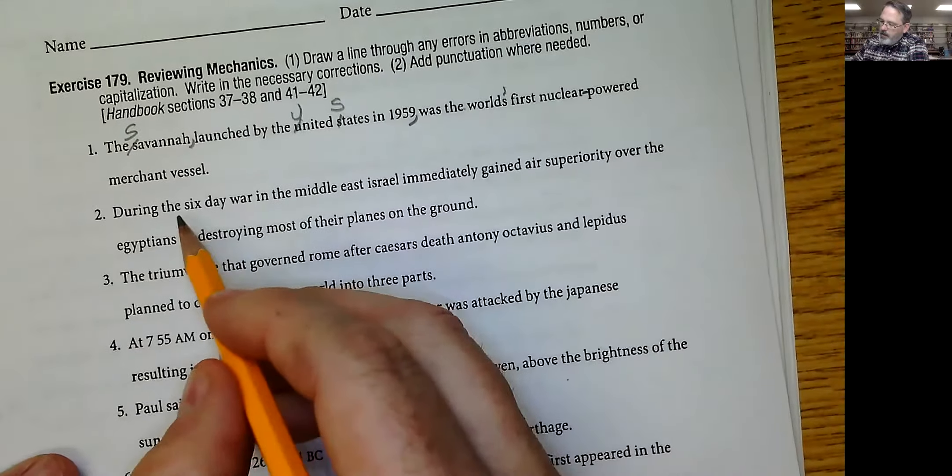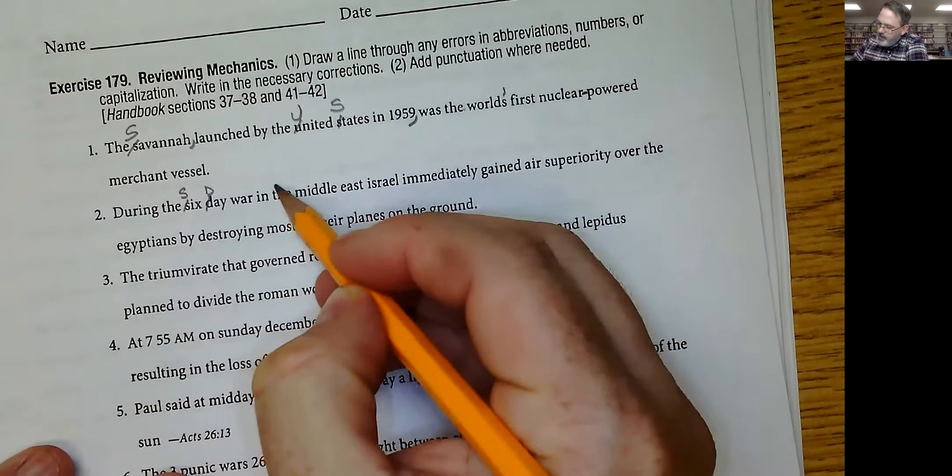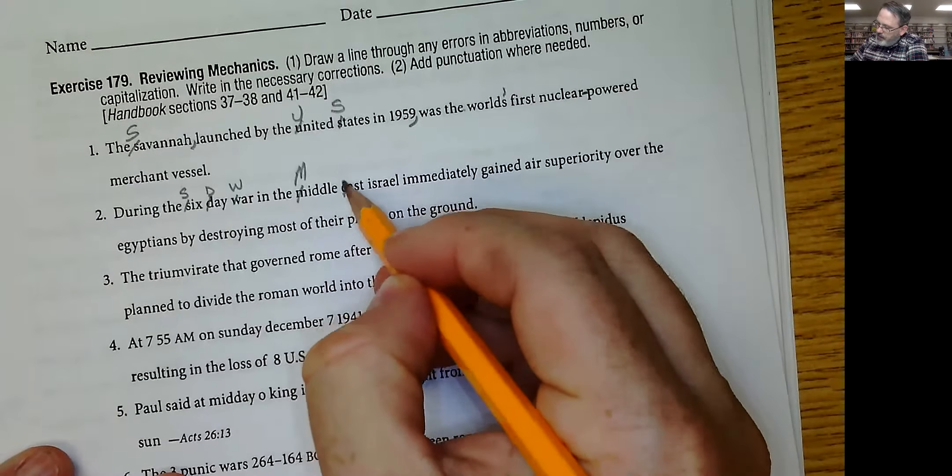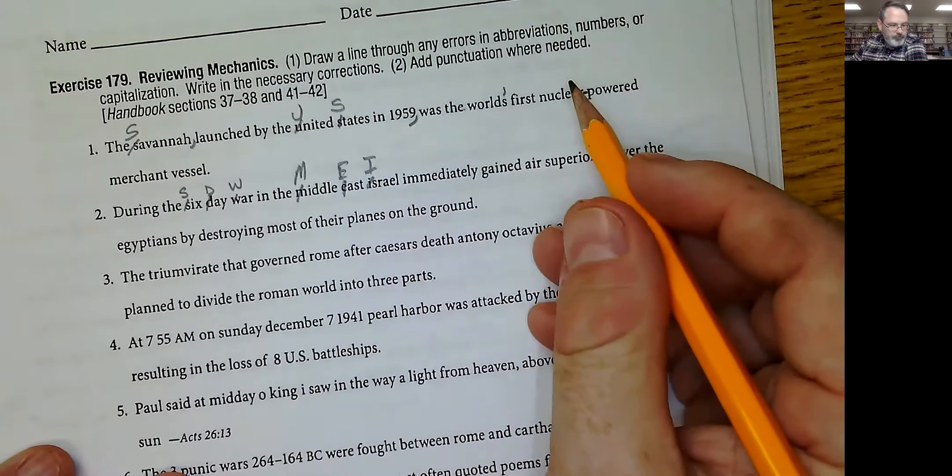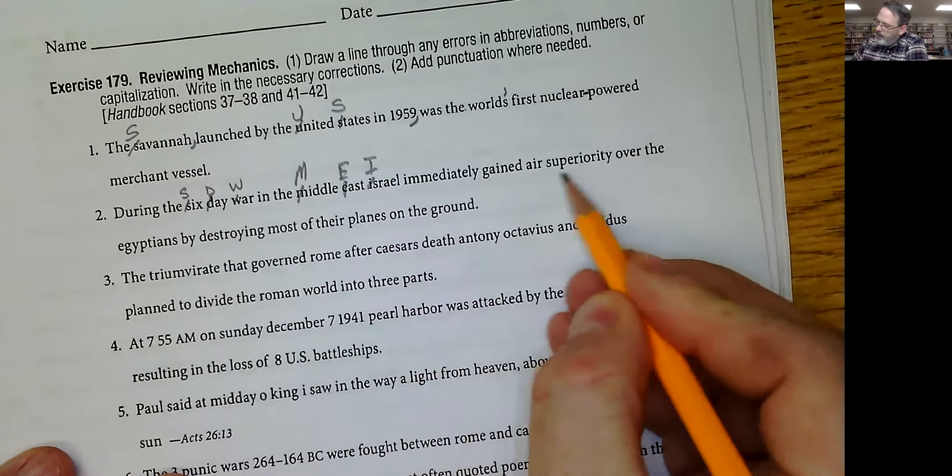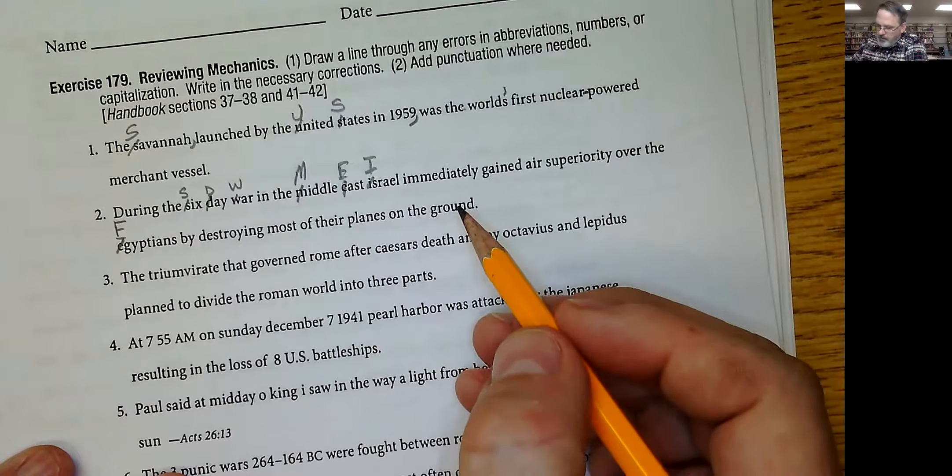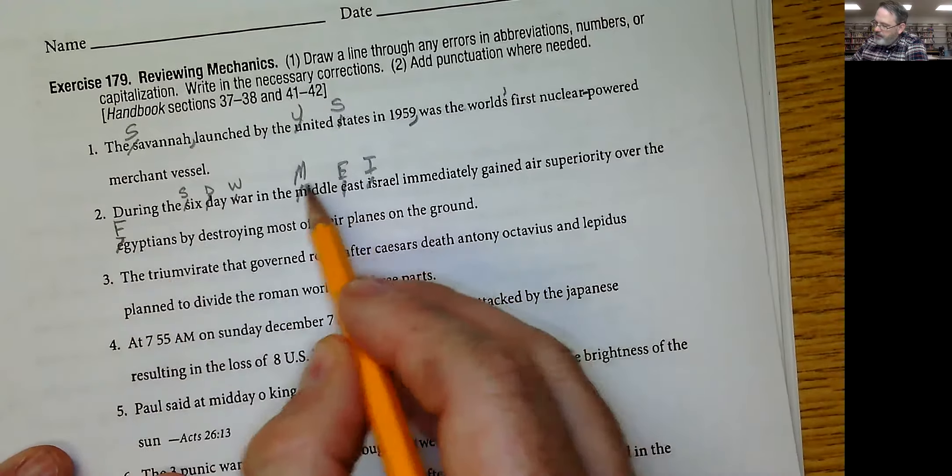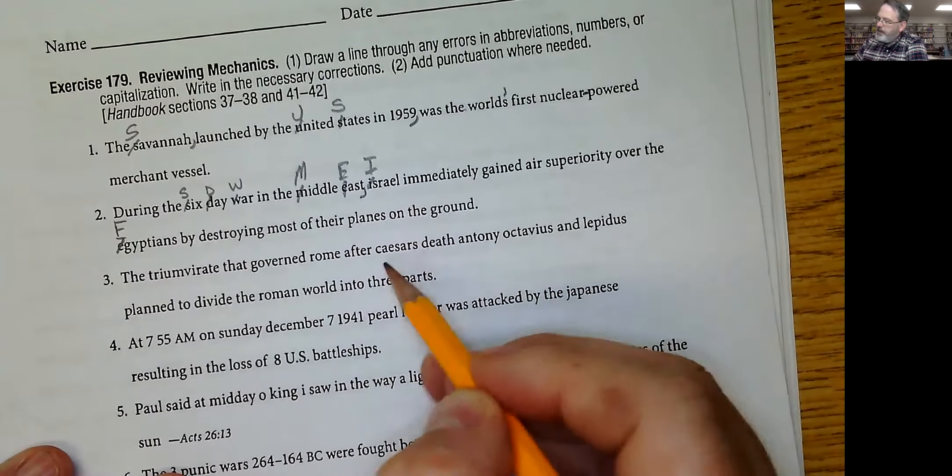Let's do one more. During the Six Day War. That's the name of a war. So Six Day War. Middle East is a region, so Middle East. Israel is a country. Immediately gained air superiority over the Egyptians, the country, by destroying most of their planes on the ground. That's it. So, the only other thing is, this is a dependent clause during the Six Day War in the Middle East, comma, Israel immediately gained air superiority.